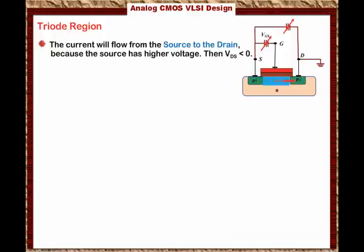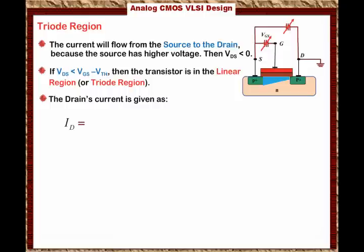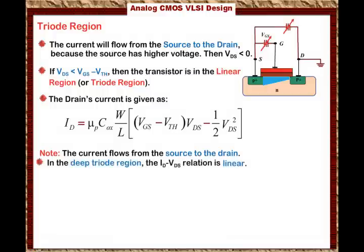The current enters the source and leaves the drain. If VDS is less negative than VGS − Vth, the transistor is in the linear or triode region. Under this condition, the drain current is: ID = μP·COX·(W/L)·[(VGS − Vth)·VDS − ½·VDS²]. Note that the current flows from source to drain, meaning the current leaves the drain in the PMOS transistor. In the deep triode region, when the magnitude of VDS is small, the ID versus VDS relationship is linear.